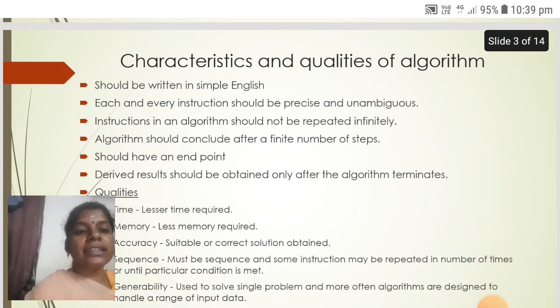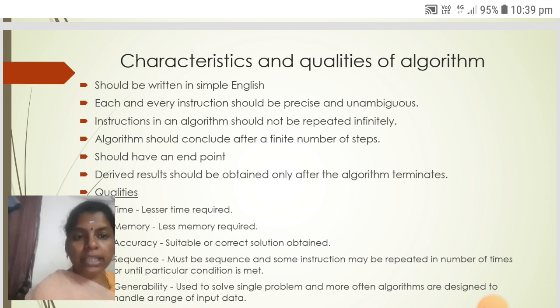Next we are going to see about the characteristics of algorithm. The algorithm should be written in simple English. Each and every instruction should be precise and unambiguous. Instructions in an algorithm should not be repeated infinitely. Algorithm should conclude after a finite number of steps. It should have an end point.